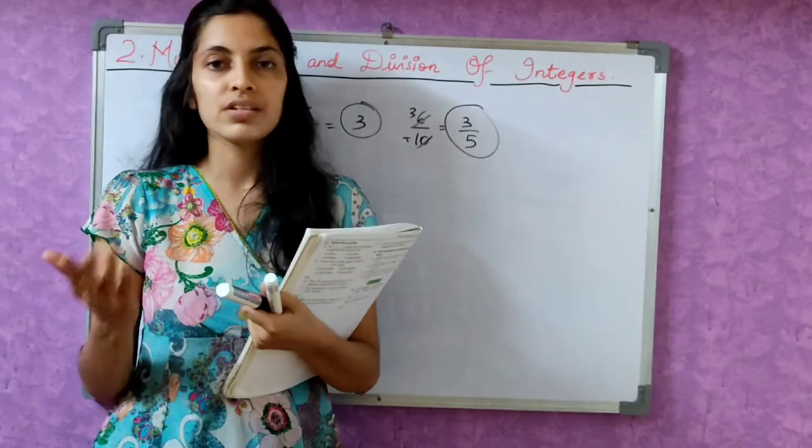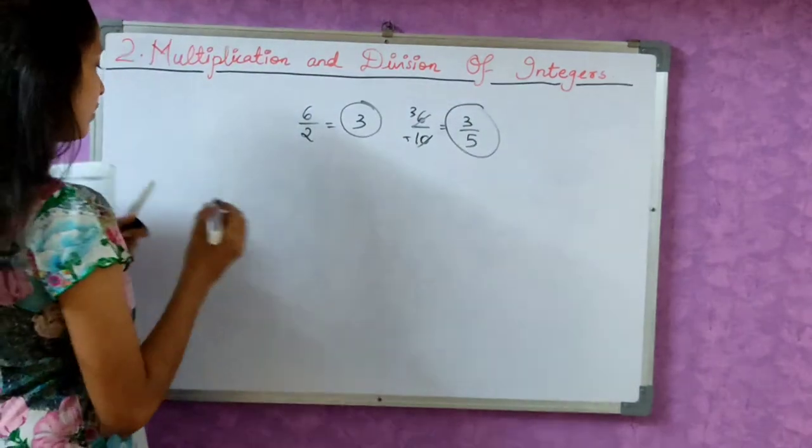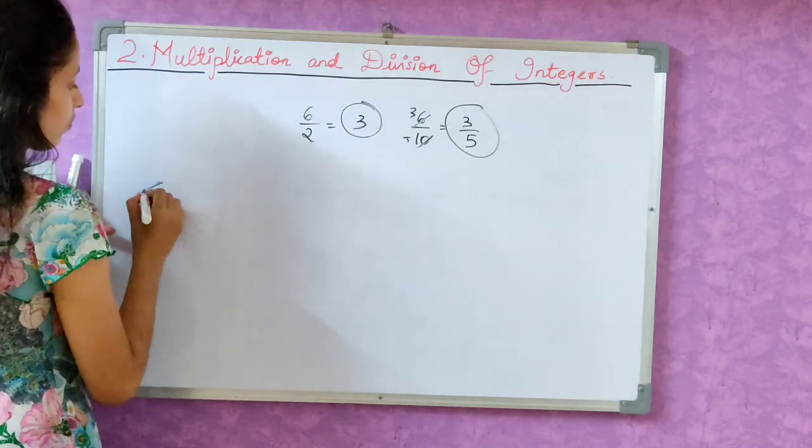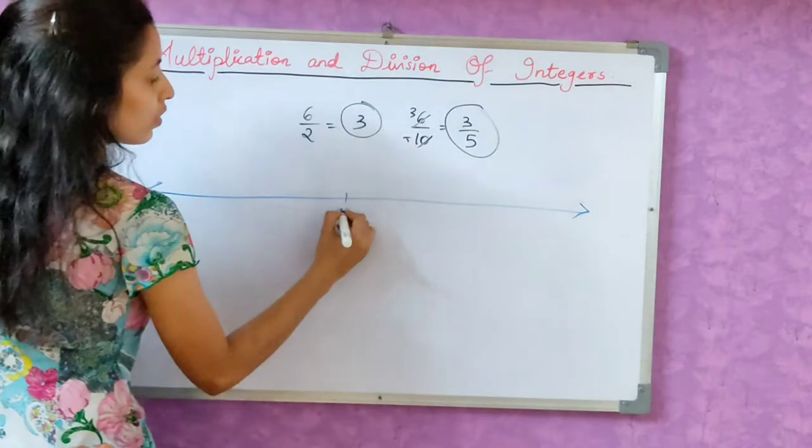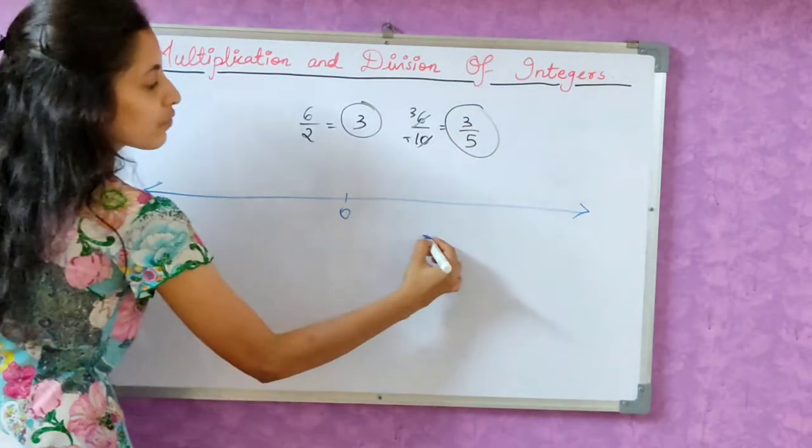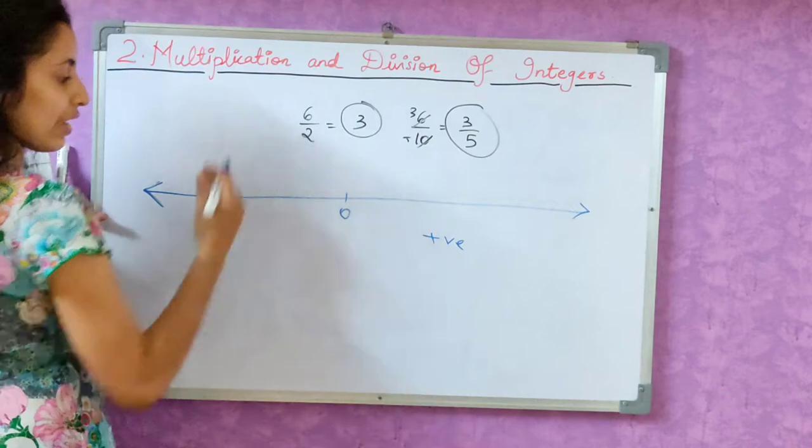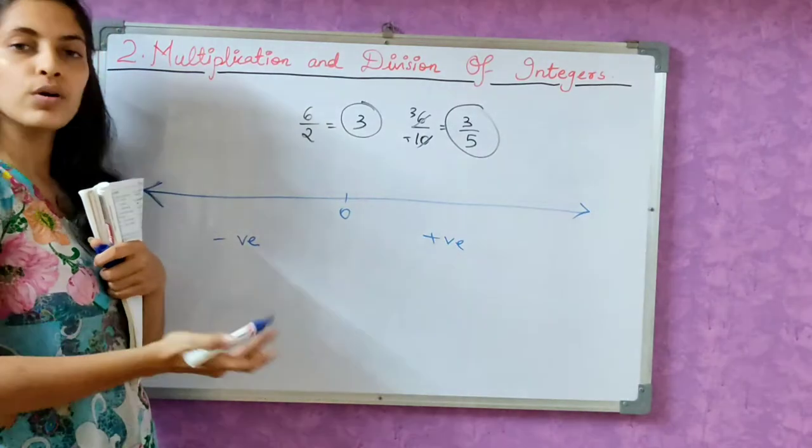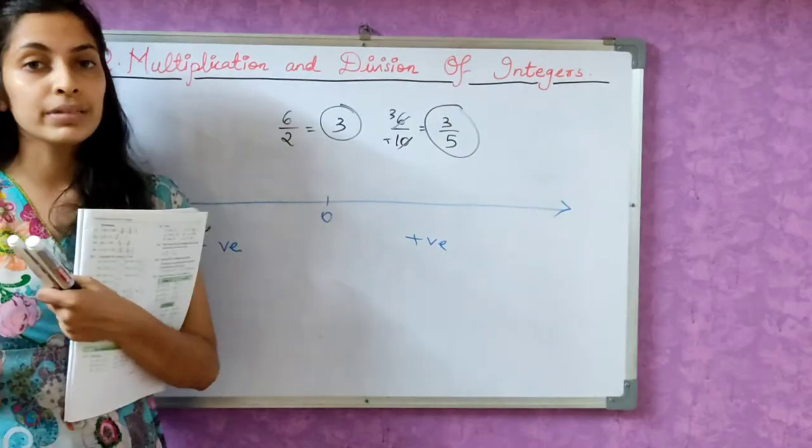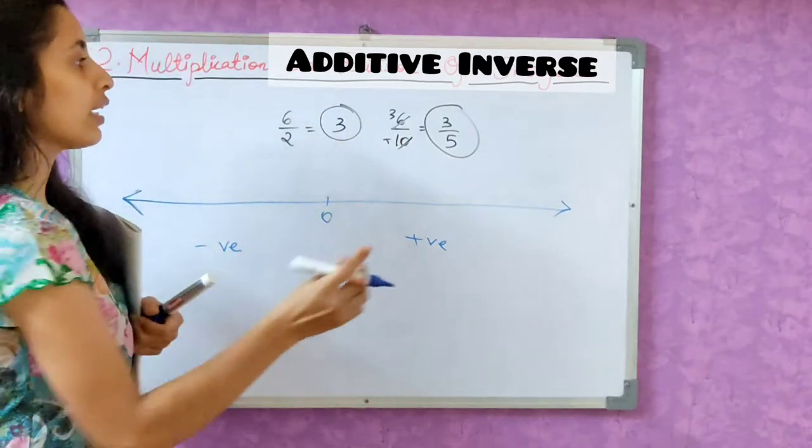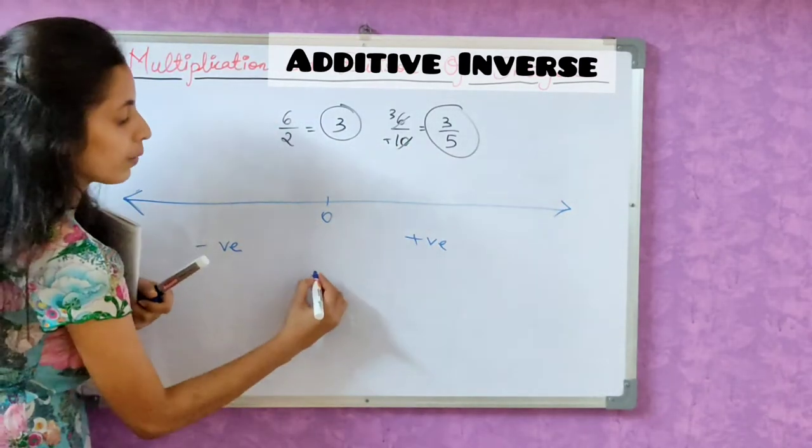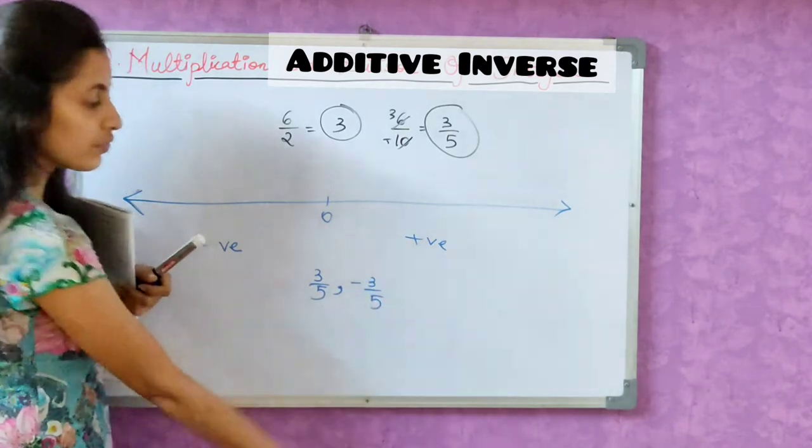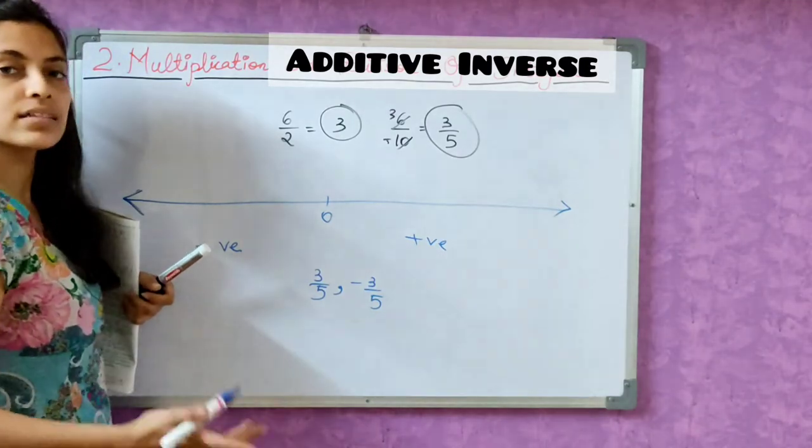There are two types of numbers: positive numbers and negative numbers. When we make a number line, we make numbers on the right-hand side positive, and on the left-hand side, we make negative numbers: negative fractions, negative integers, whatever. Now we see how to do additive inverse numbers. You can see 3 by 5. What is additive inverse number? This is 3 by 5. Additive inverse number is minus 3 by 5. When we add them, the result is 0.